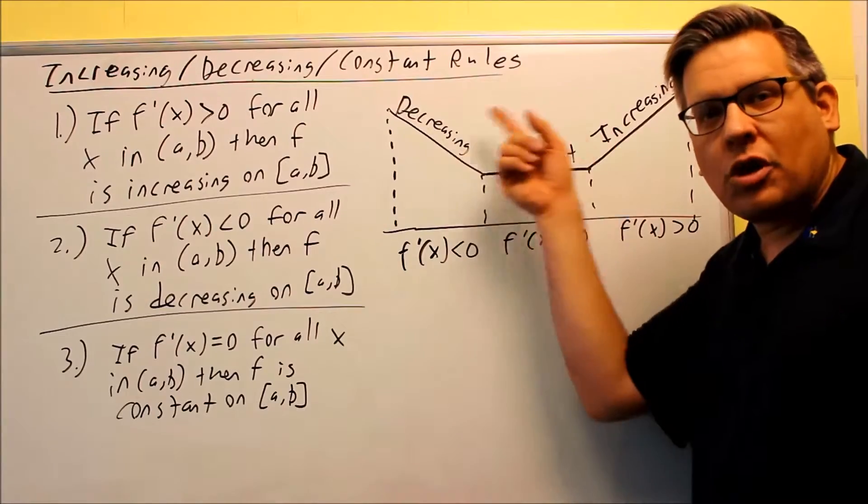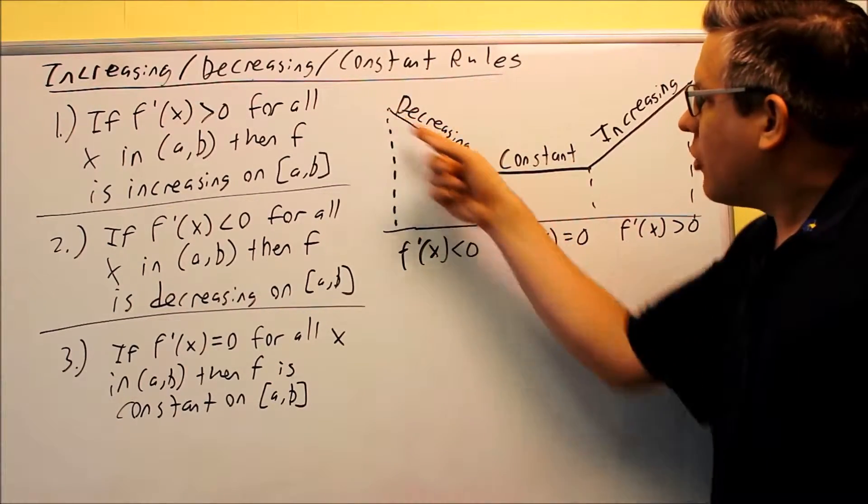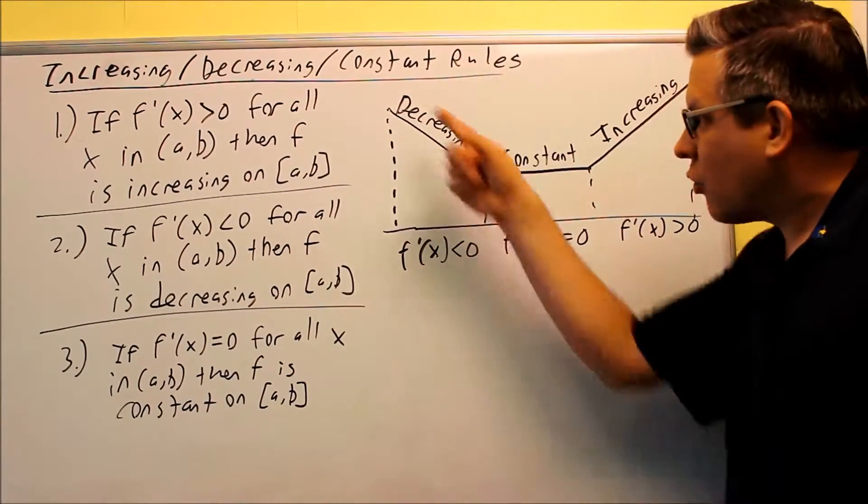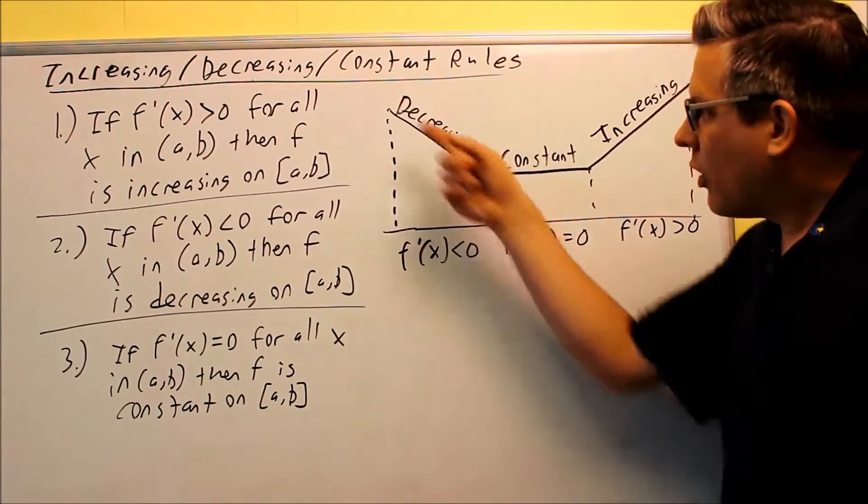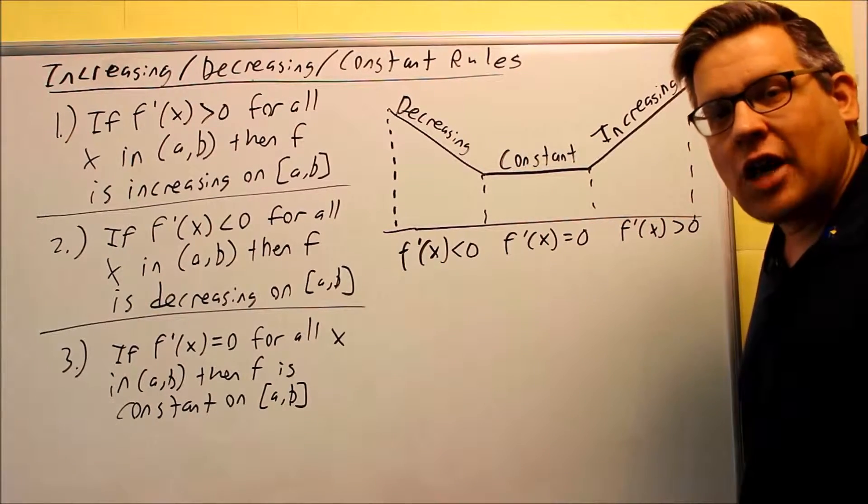Here's the connection between the graph and calculus. We have a decreasing part here. We talked about before that decreasing, as you move from left to right, the graph is moving downhill. Well, what does that really mean? If you're going downhill, that means it's going to have a negative slope.